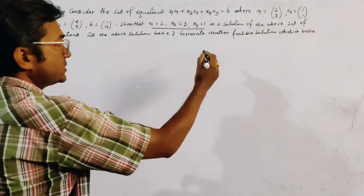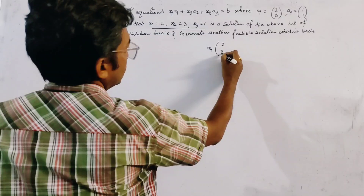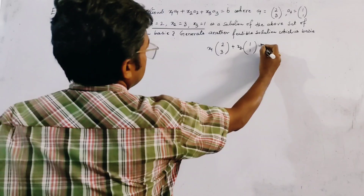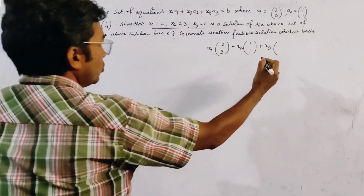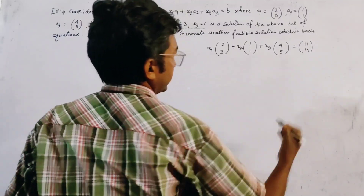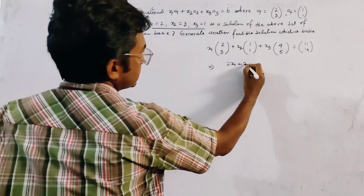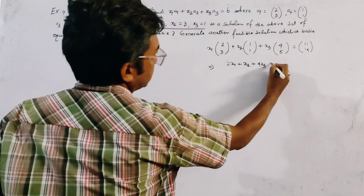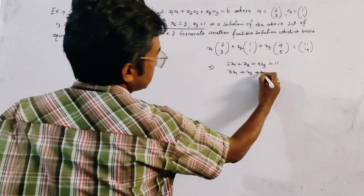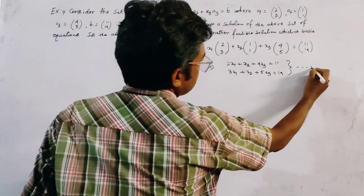We first write the system of equations as x1 into a1 = [2,3], plus x2 into a2 = [1,1], plus x3 into a3 = [4,5], equals b = [11,14]. So the system of equations can be written as: 2x1 + x2 + 4x3 = 11, and 3x1 + x2 + 5x3 = 14.